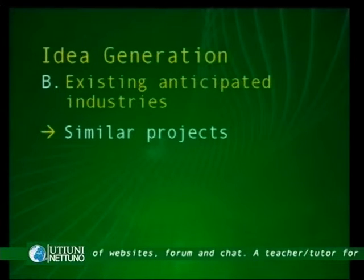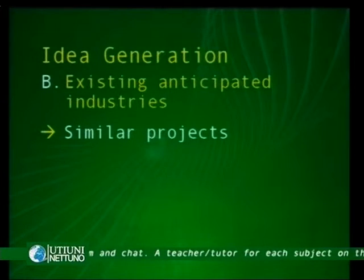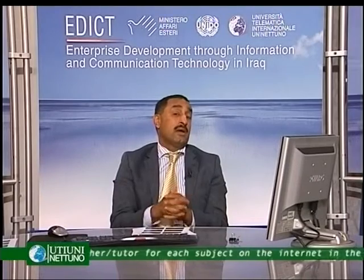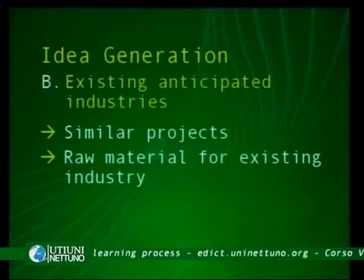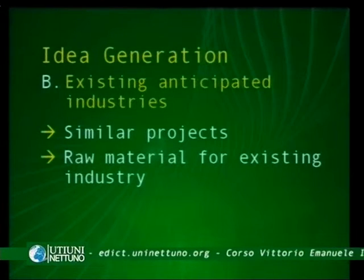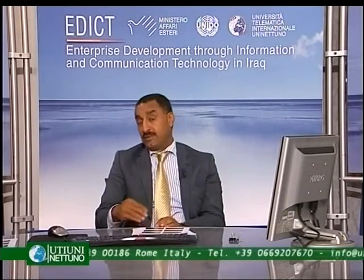In idea generation section B, we look into existing and anticipated industries. There are similar projects already there — I have to look into them. I'm going to be innovative by adding something new, or I can simply replicate that idea. I also need to consider whether raw materials are available for that existing industry, or if I can source them from another region or country — making myself a feed industry that brings raw material to market for those industries.